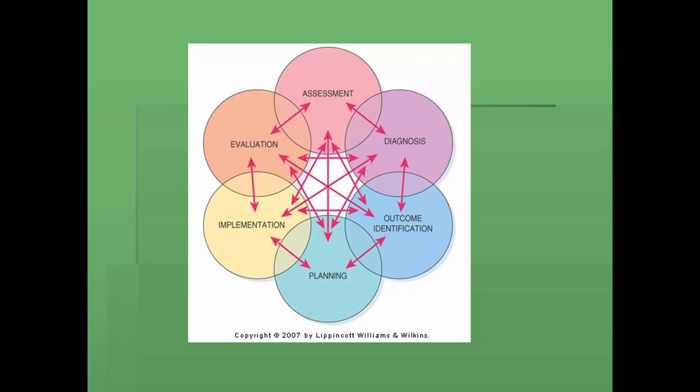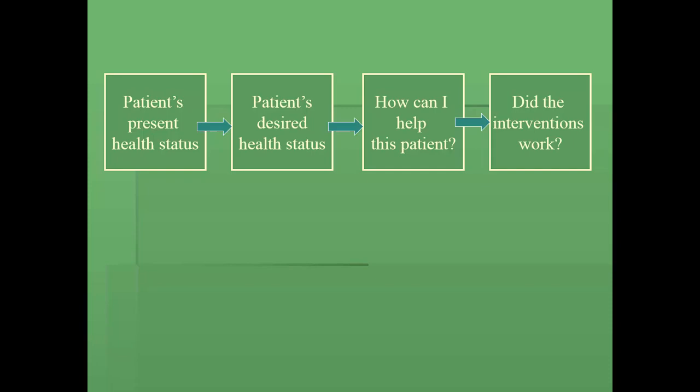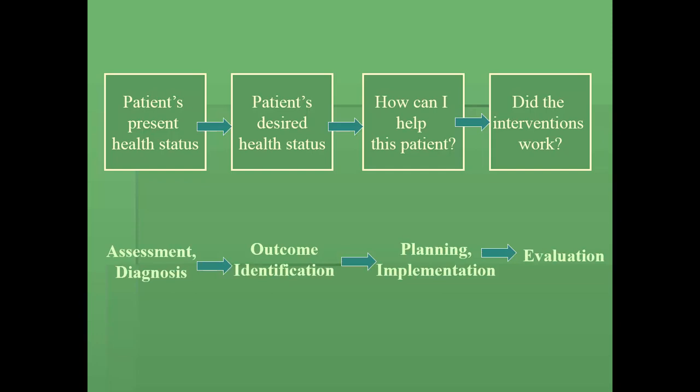Not everybody uses the same terminology, but you will find that no matter who it is and what system they use in terms of a problem-solving approach, there's a very similar pattern. Some people, instead of using ADPIE, look at their problem-solving approach in a four-step way: they look at the patient's present health status, think about what the desired health status might be, think about how they can help this patient, and finally whether the interventions worked. If we overlay our nursing process words with that, the patient's present health status really is our assessment and diagnosis, the desired health status aligns with outcome identification, how can I help this patient is about planning and implementation, and did the interventions work is akin to our evaluation phase.